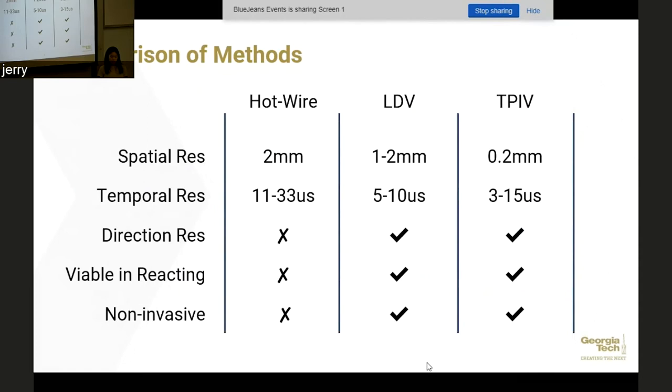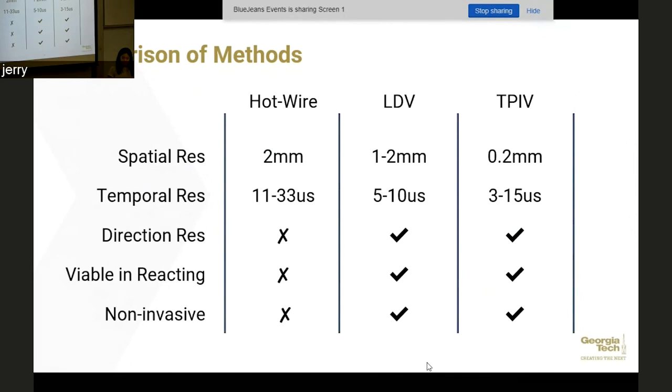Before I move on, I just wanted to emphasize that a key difference between these three methods is that hotwire and LDV measure time series data continuously. So you're only getting a very small probe volume, but you're getting continuous time data throughout the time interval of your measurement. On the other hand, TPIV, you're getting simultaneous spatial data. So you're getting the entire field of view, a very large field of view, at the expense of not having continuous time data. So there's different characteristics that you can get from both of these methods.